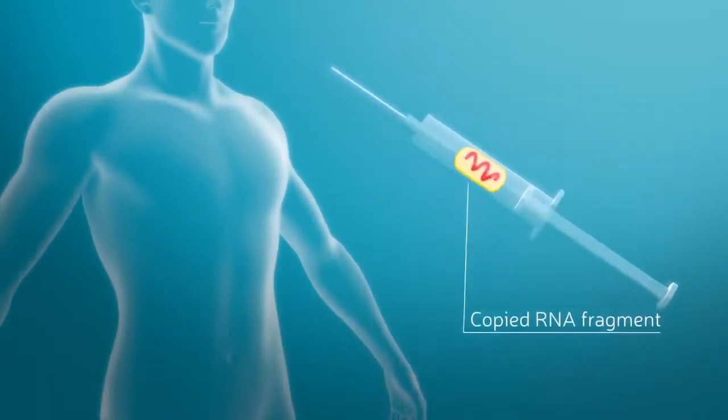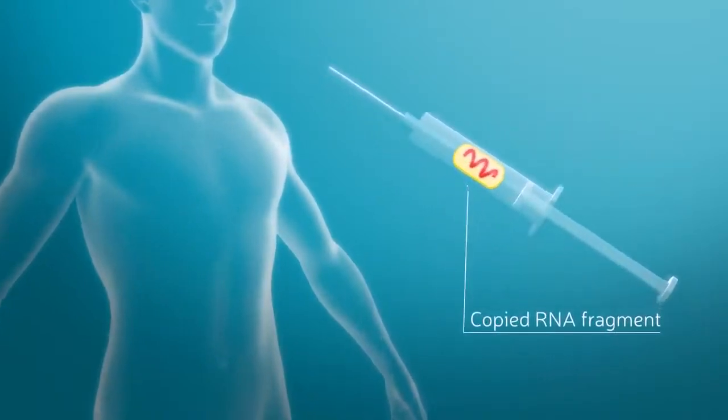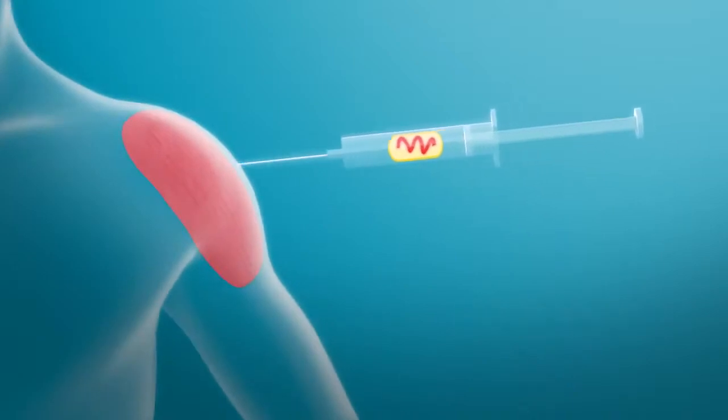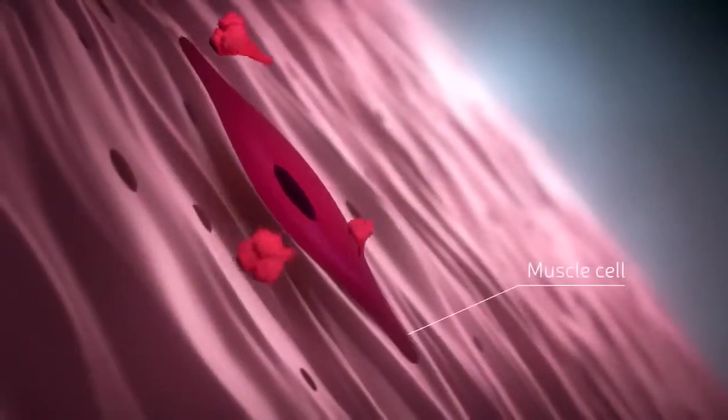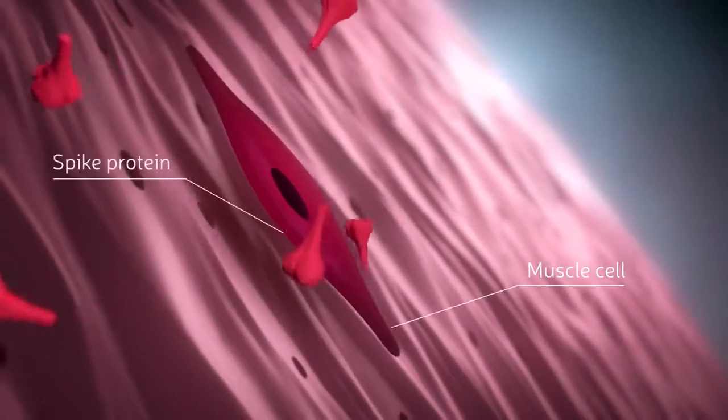With the vaccine, only this blueprint, a short piece of RNA, enters our body without altering our genetic code. This small RNA sequence, when injected into the muscle, initiates the production of spike proteins, and then it degrades.